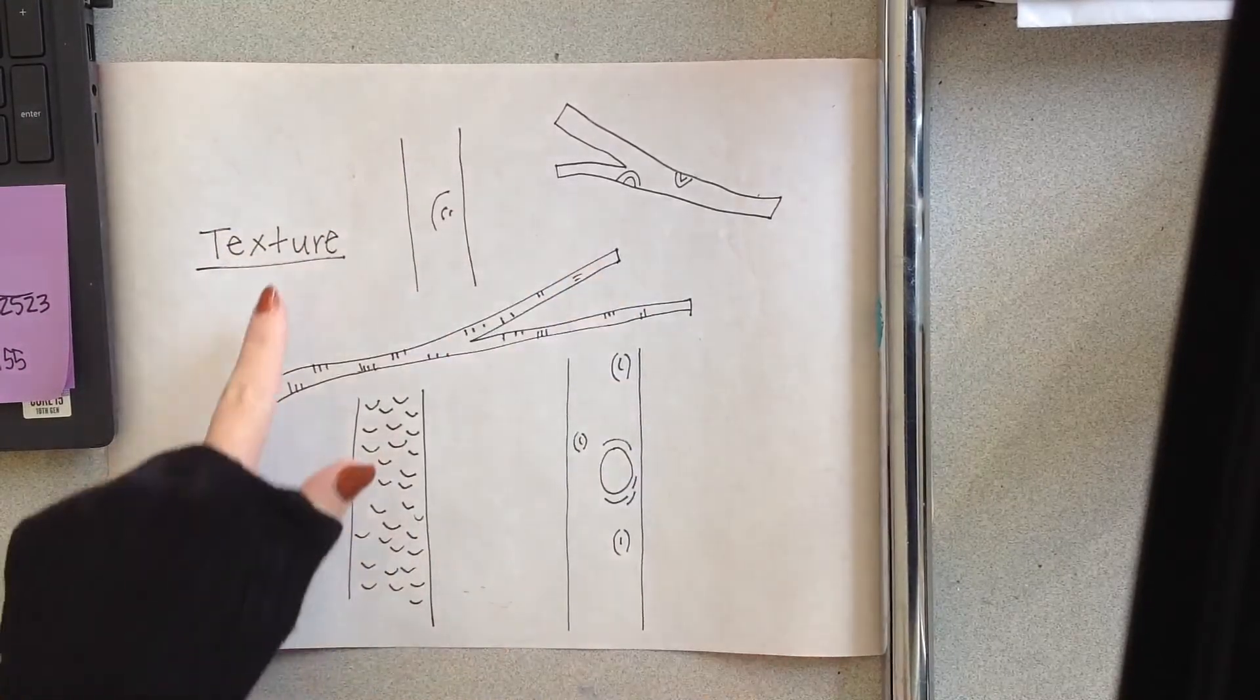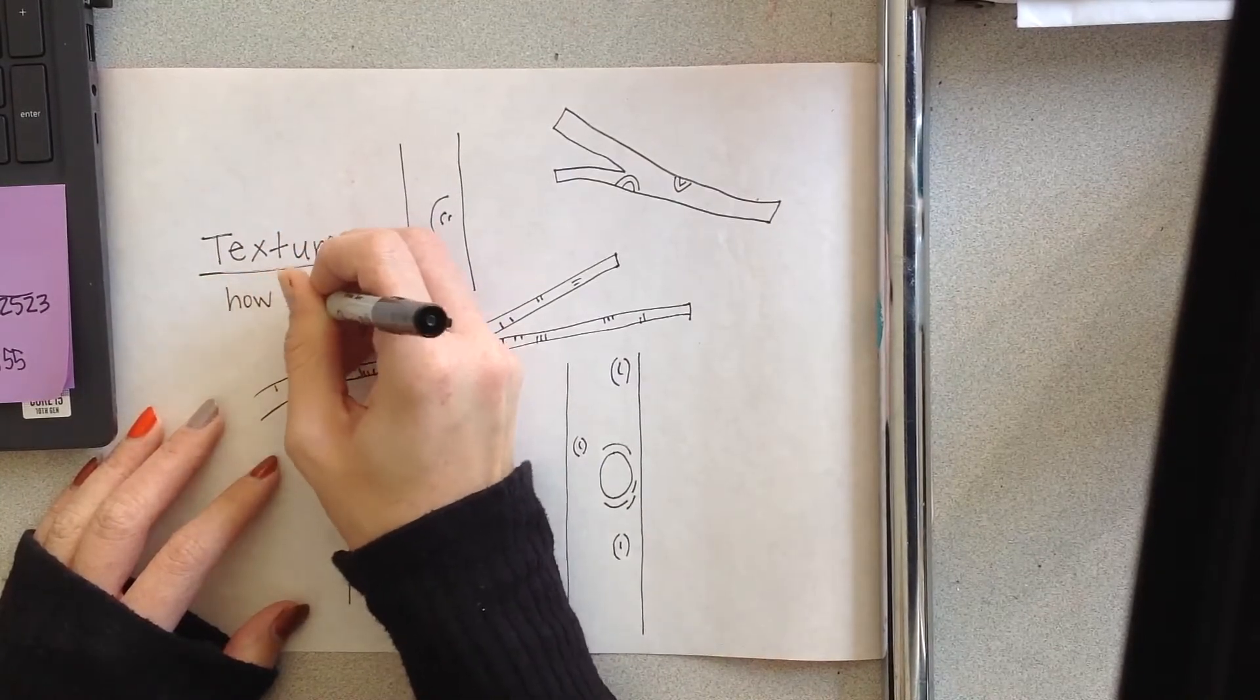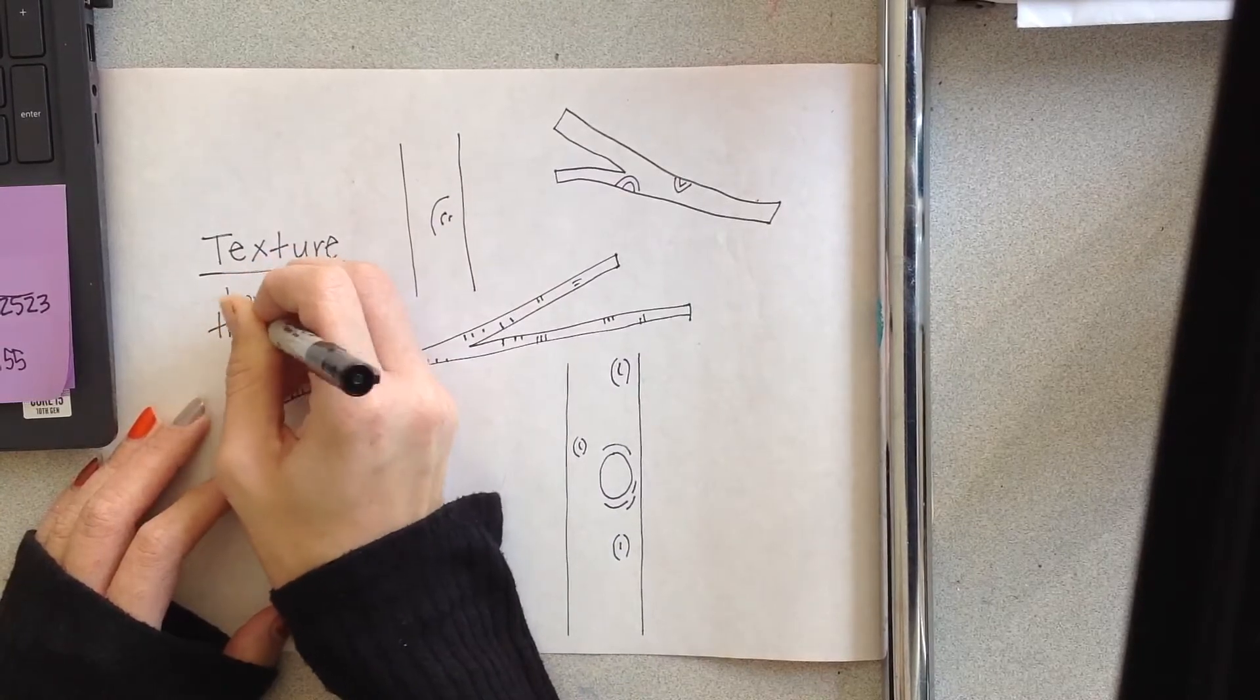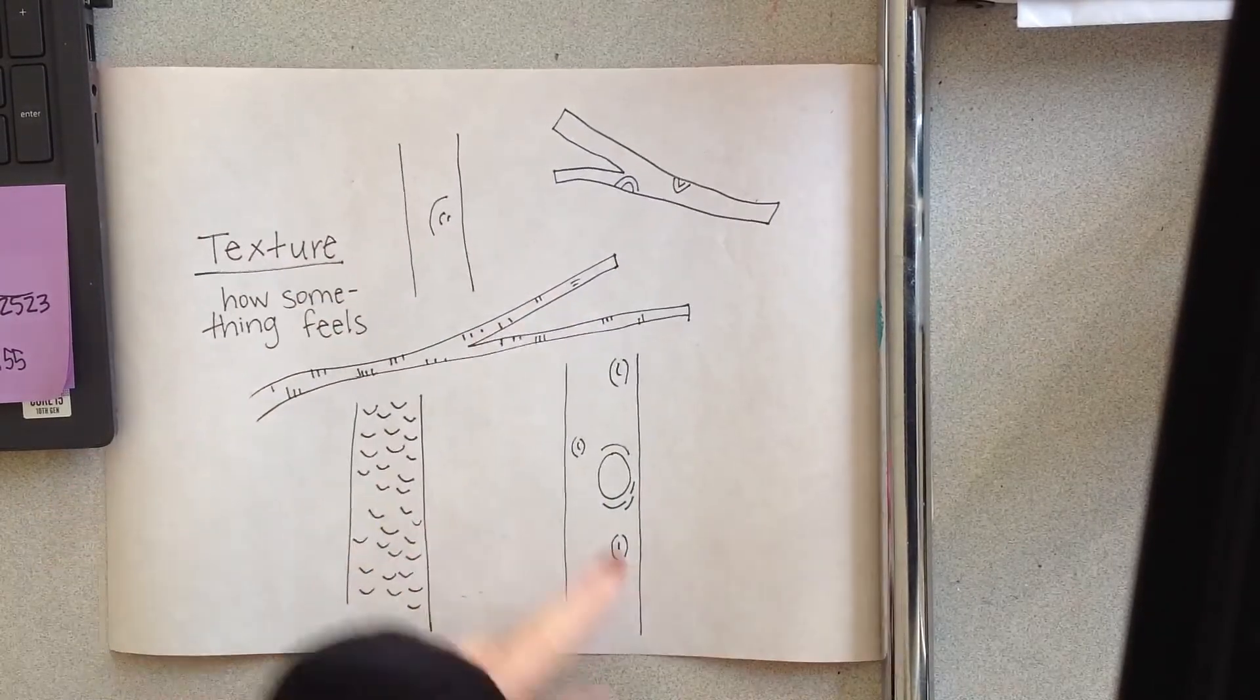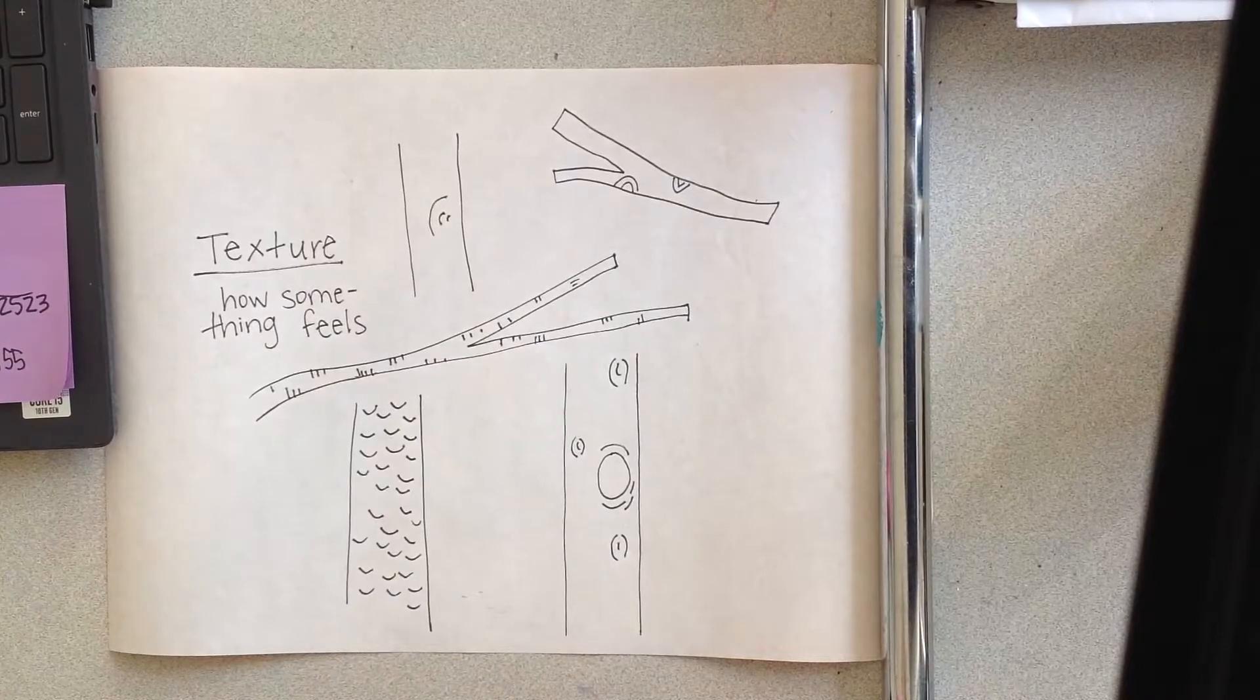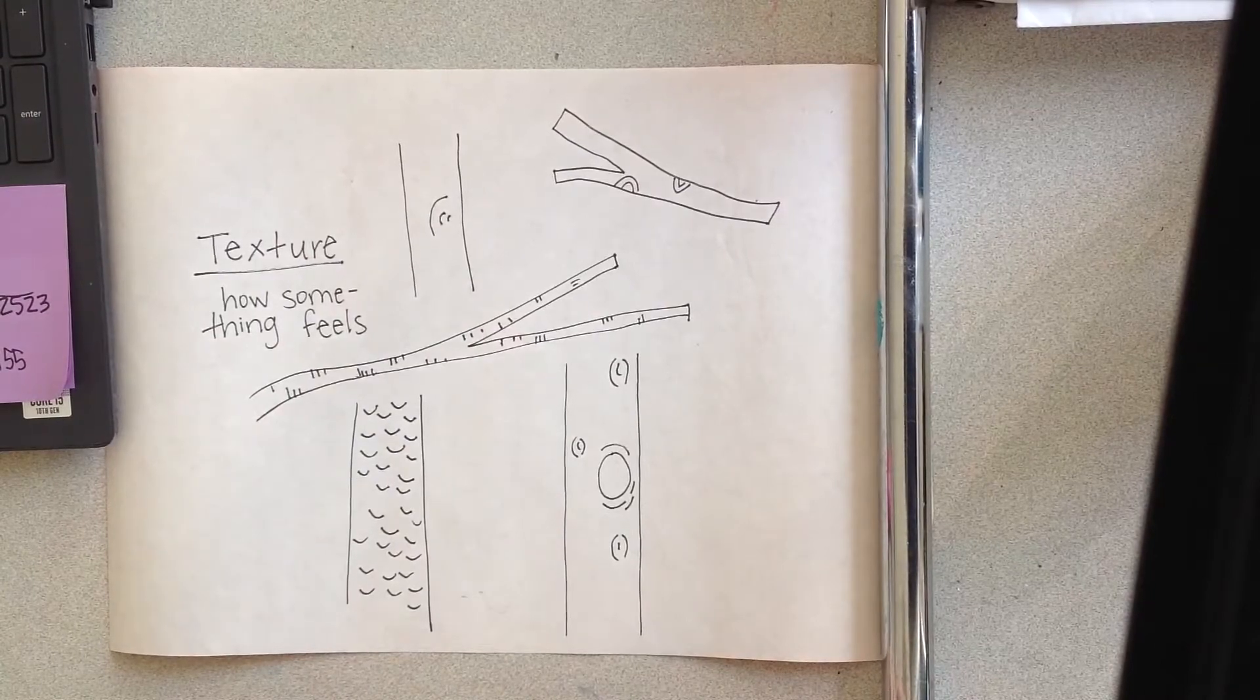Okay, so texture is how something feels, and we are going to draw it with lines. I'm going to draw a couple different examples of different tree textures that I saw throughout the book, as well as different textures I saw in the leaves and grass and branches.